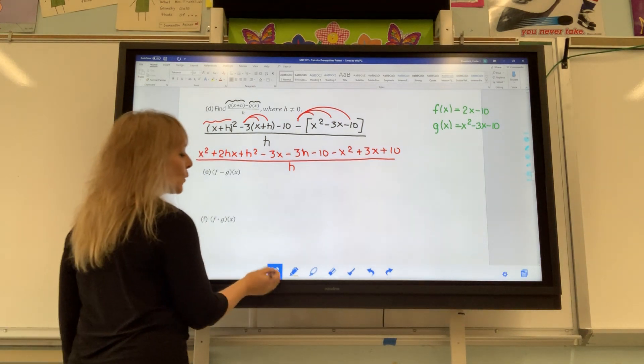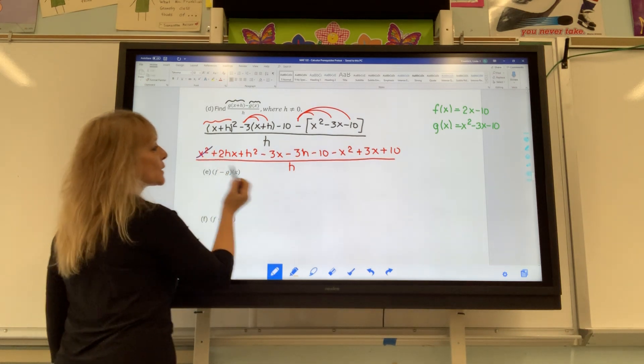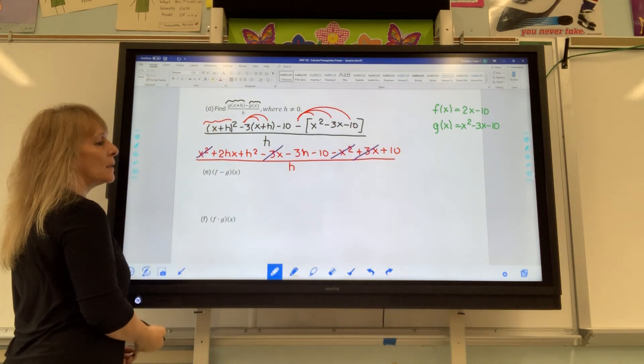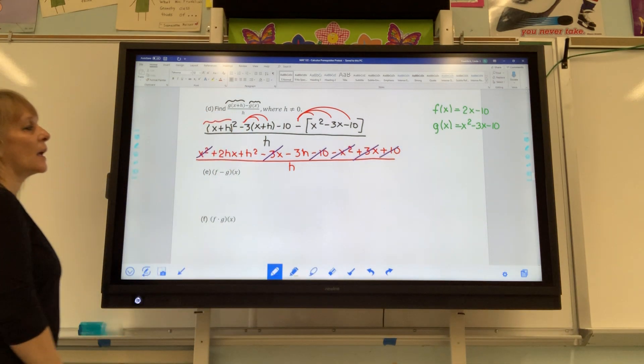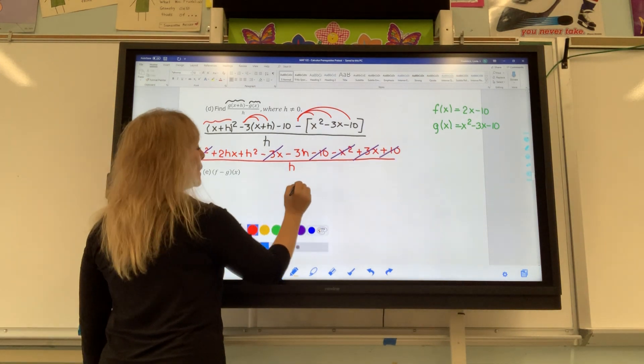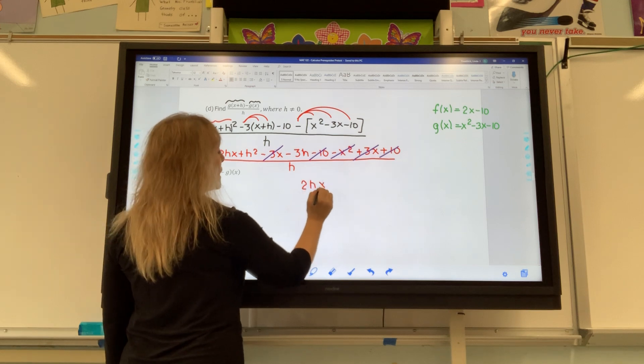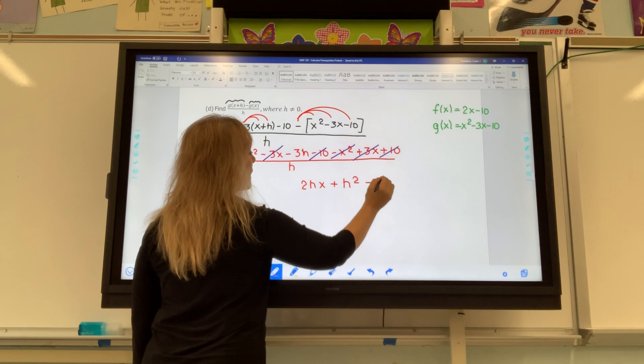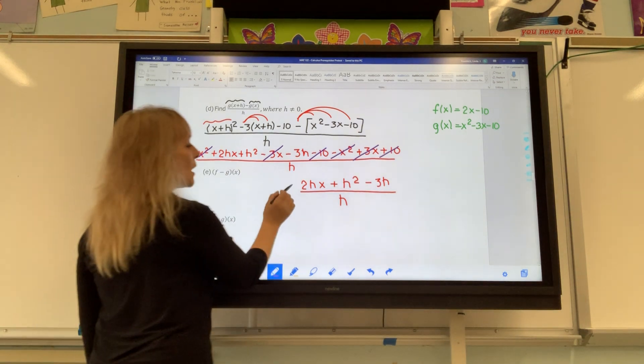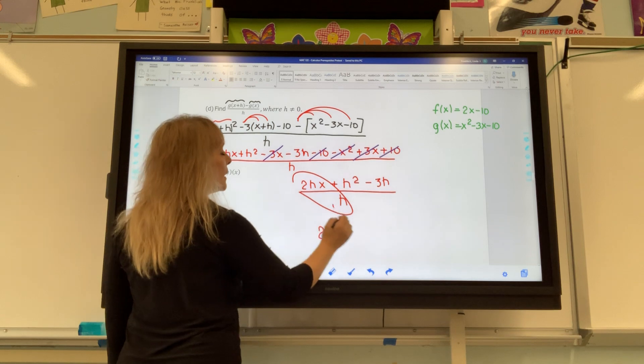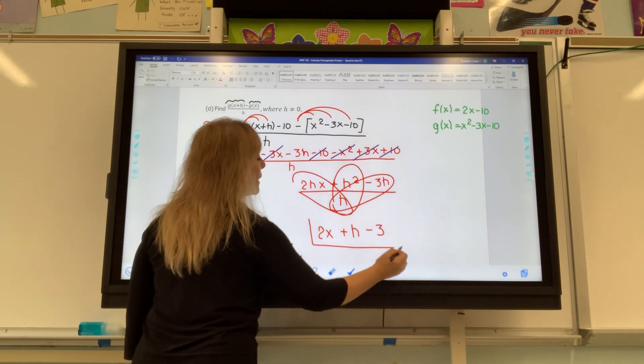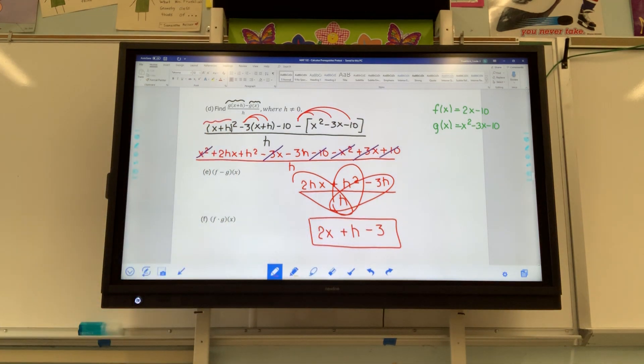Now, when you look at the numerator, it is quite long. But I hope you realize that this x squared and this x squared cancel because the signs are different. This negative 3x and this positive 3x cancel. And this negative 10 and positive 10 cancel. You actually have three terms left. What is left is 2hx plus h squared minus 3h, all divided by h. But you can do the division. On the left-hand side, you get 2x when you divide. In the middle, you get plus h. And on the far right, you get negative 3. That is the answer for letter D.